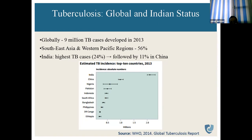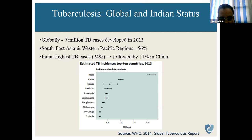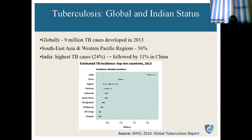Southeast Asia and Western Pacific regions accounted for 56% of TB cases. India has the highest TB cases at 24%, followed by China at 11%. India leads globally in TB burden, followed by China, Nigeria, Pakistan, Indonesia, South Africa, Bangladesh, Philippines, Democratic Republic of Congo, and Ethiopia, as per WHO Global Tuberculosis Report 2014 data.